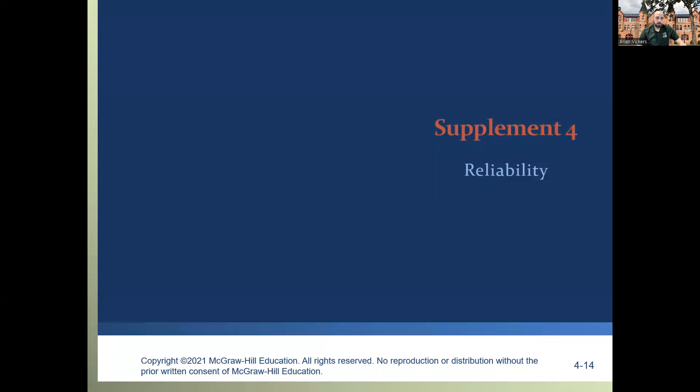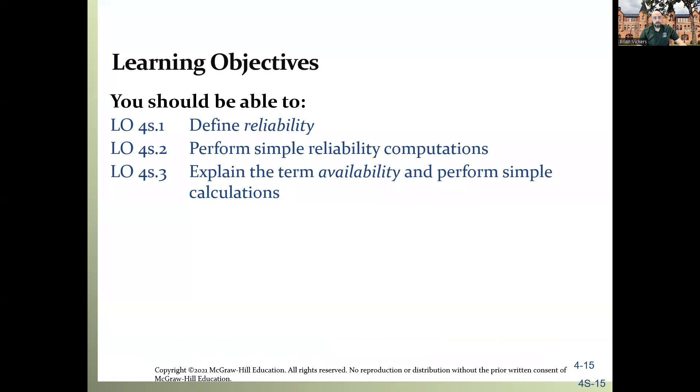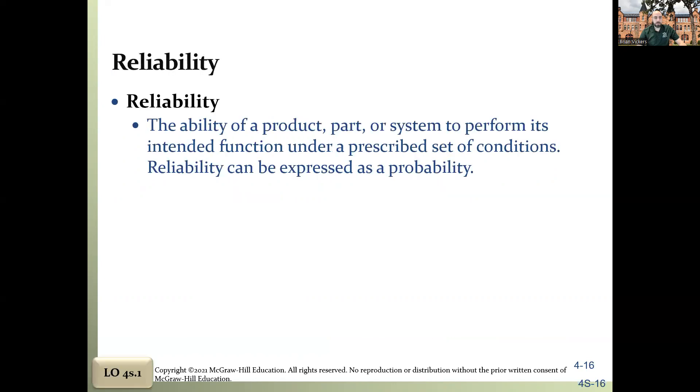Now let's look at the reliability chapter, supplementary chapter four. This chapter has three main objectives: defining reliability, performing simple reliability computations, and then explaining what availability means and performing those simple calculations. So reliability is just can the product work as intended. Simple as that. It's the ability for it to work, to do what it's intended to do. That can be expressed as a probability, a likelihood that it will work. That's the reliability factor.